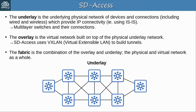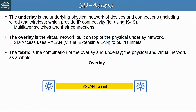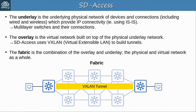For example, this is the underlay network. The physical multilayer switches and their connections form the underlay, and they are perhaps running IS-IS to share routing information and provide connectivity throughout the network. Then the overlay network consists of VXLAN tunnels, for example between these two switches. When hosts in the LAN communicate with each other, their traffic is sent over the VXLAN tunnels — that's the overlay network. And the fabric refers to the physical and virtual network as a whole, overlay plus underlay. Both are necessary to make SD Access work.